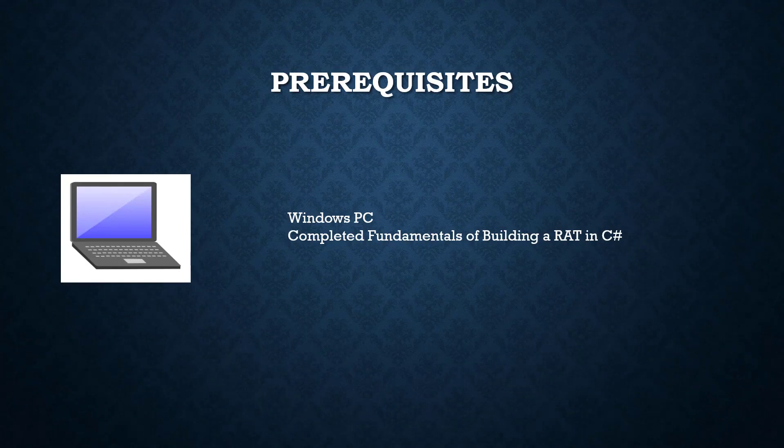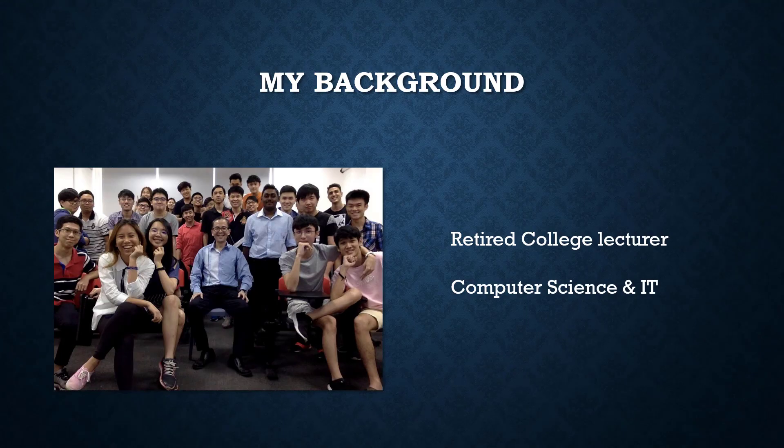Prerequisites: you need a Windows PC, and preferably completed the Fundamentals of Building a RAT in C-Sharp, which is the first course in this series. My background: by profession, I'm a retired college lecturer and I have been teaching computer science and IT for more than 20 years, and I welcome you to this course. See you inside.